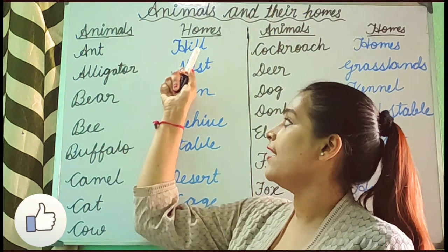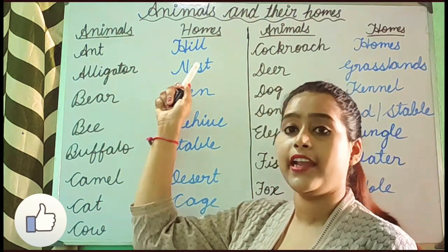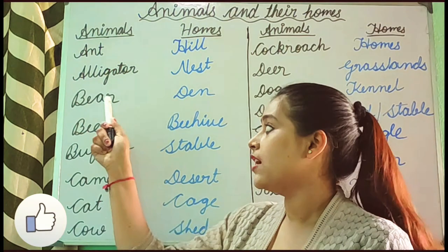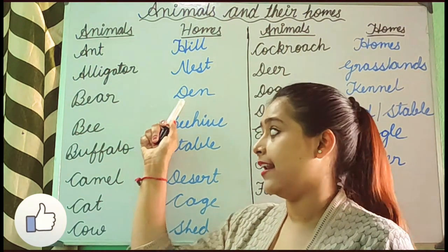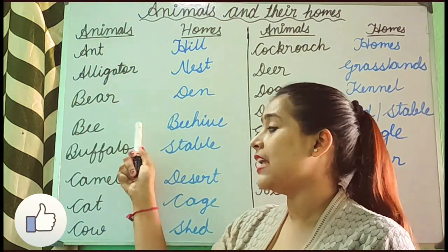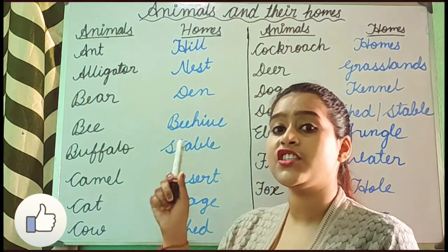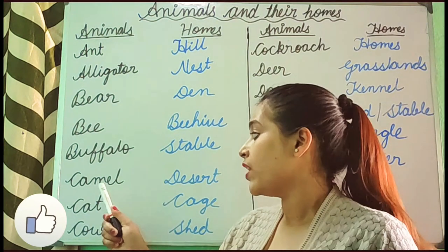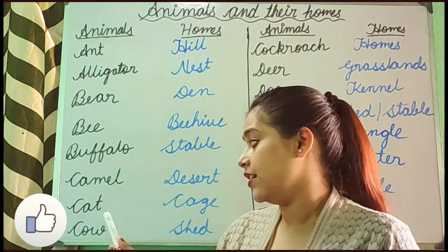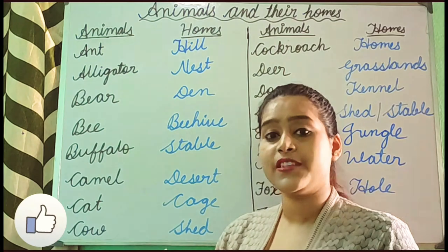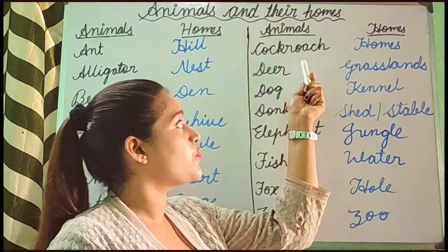Once again I am repeating. Ant lives in a hill. Alligator lives in a nest. Deer lives in a dame. Bee lives in beehive. Buffalo lives in stubble. Camel lives in desert. Cat lives in cage. Cow lives in sea.